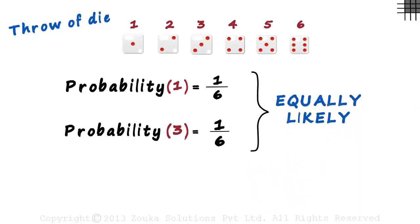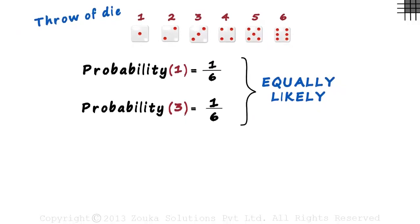Until now, in all the problems we have seen, the numerator has always been 1. When will the numerator not be 1? Let's zoom out a bit to see the next question.